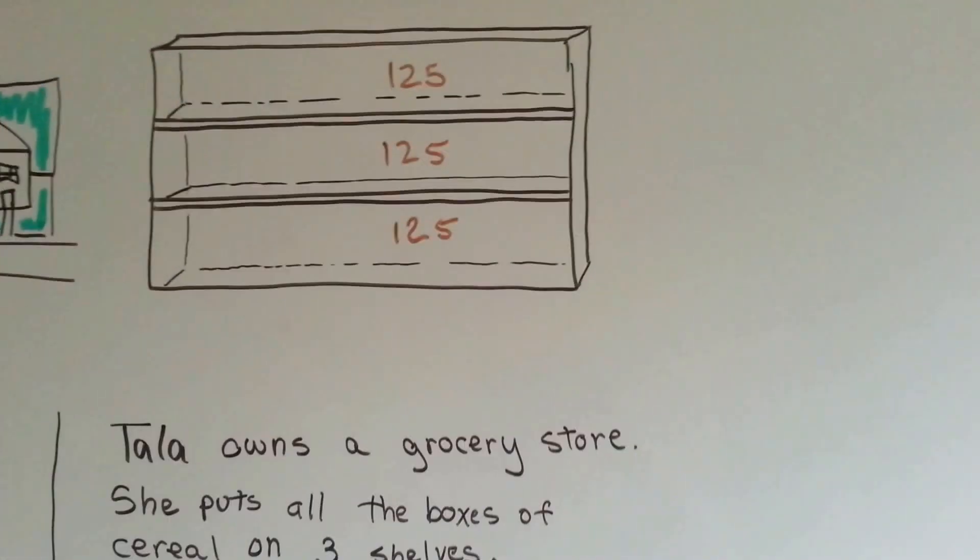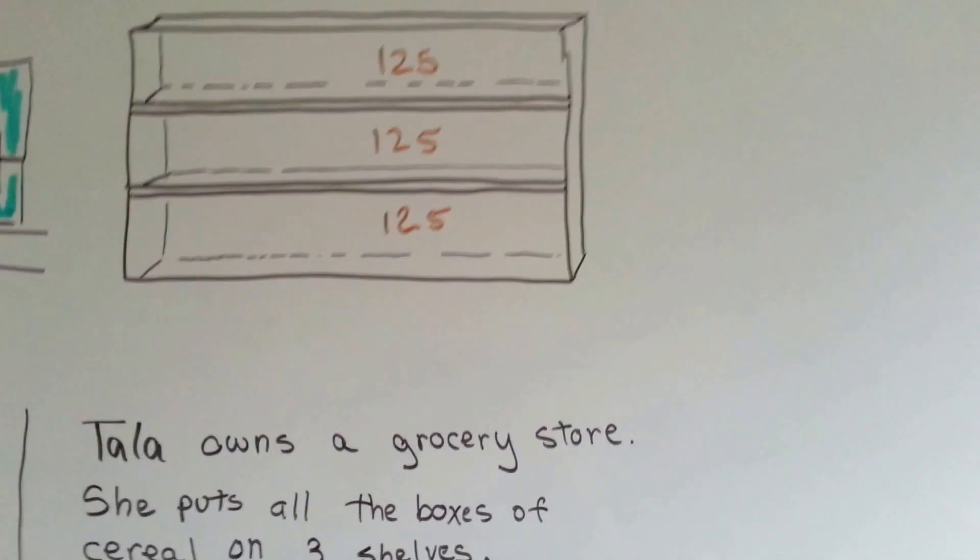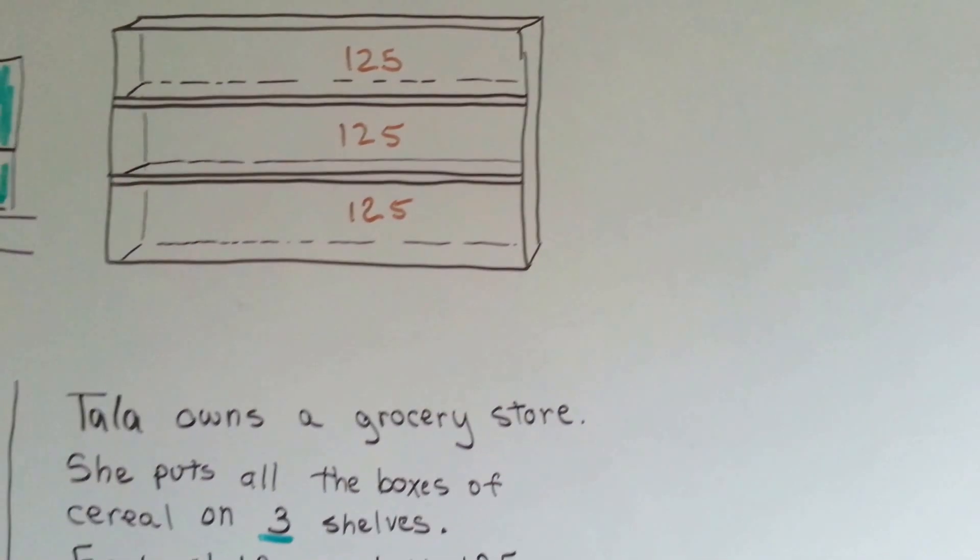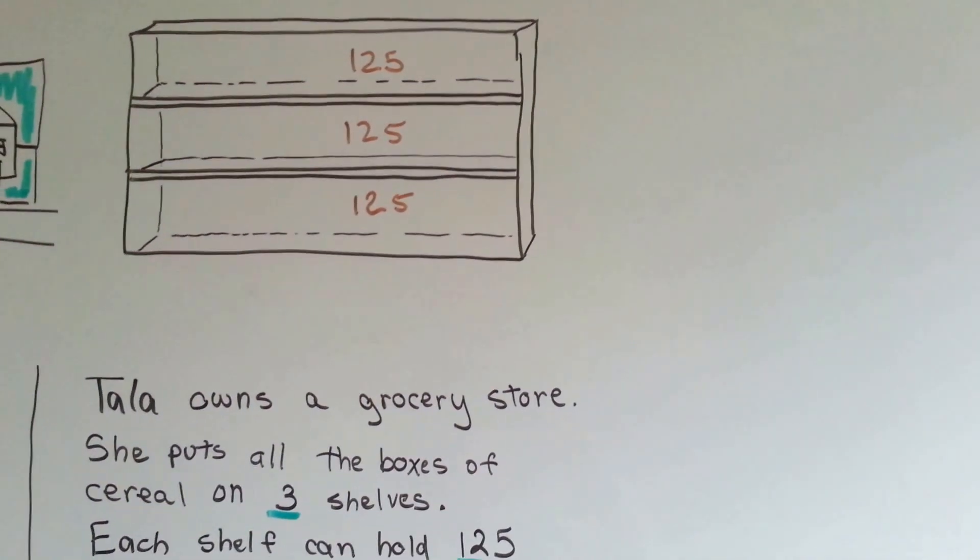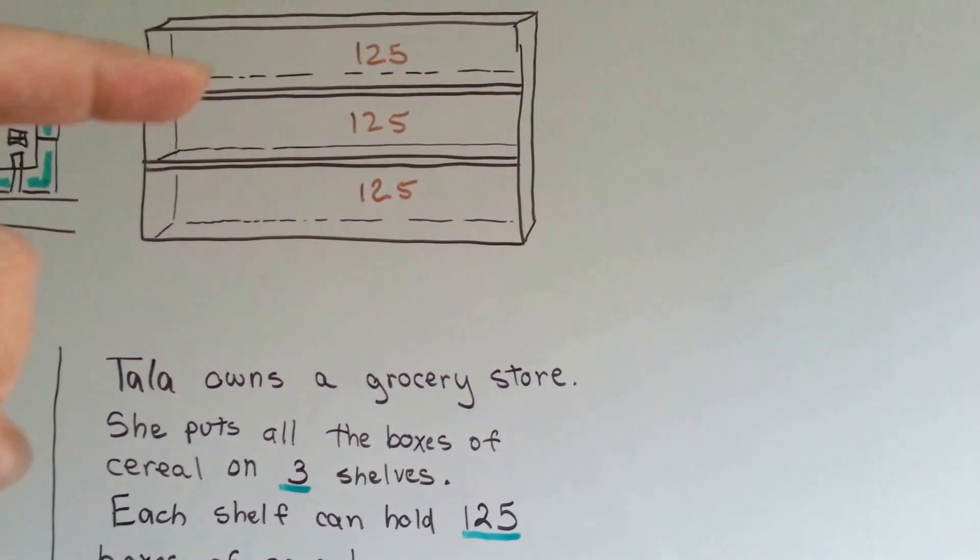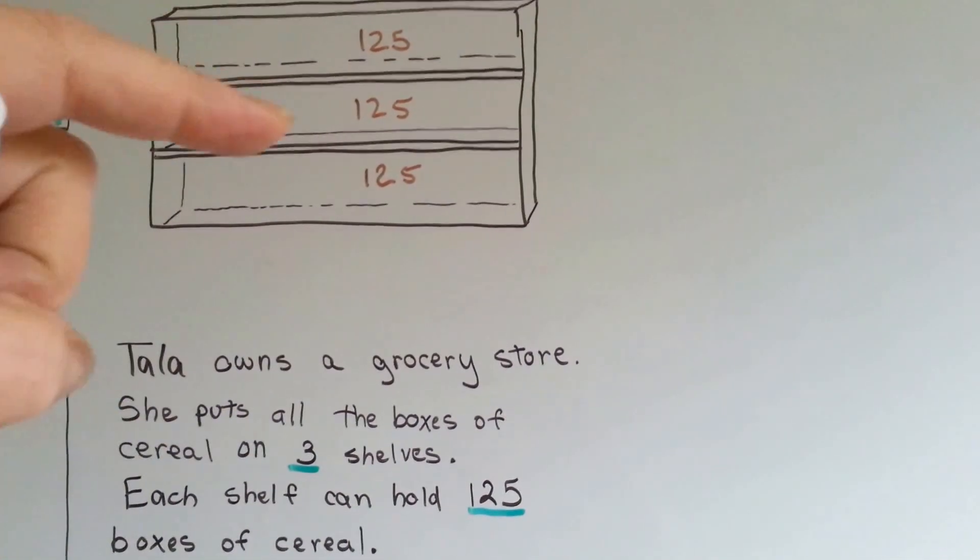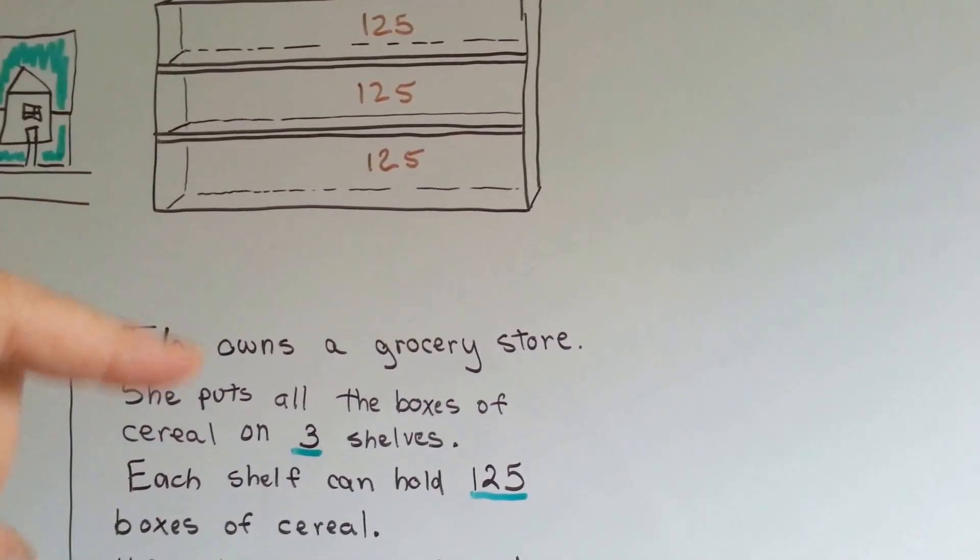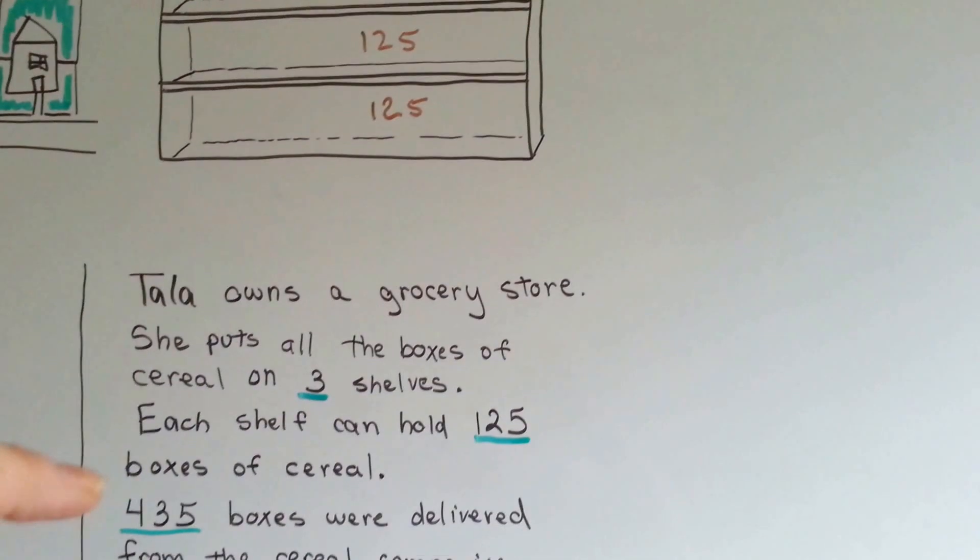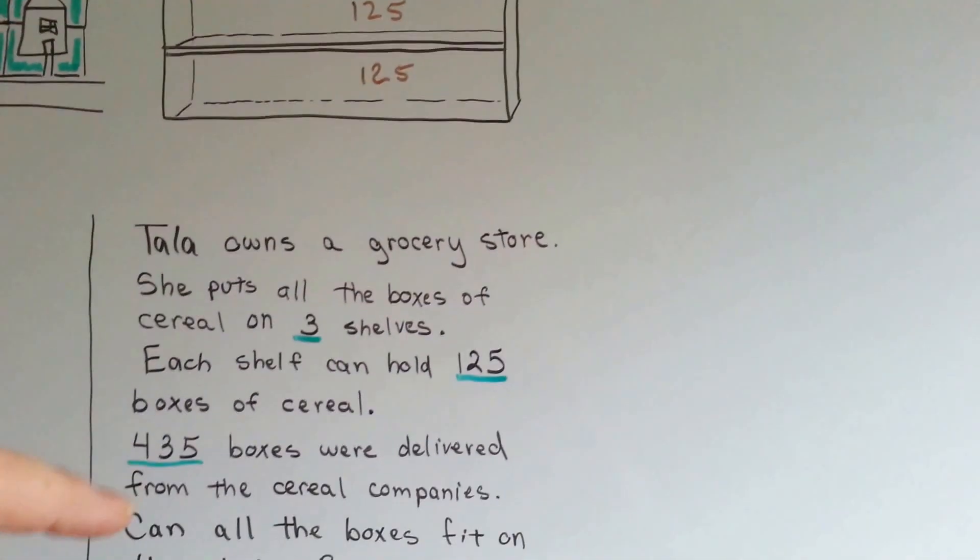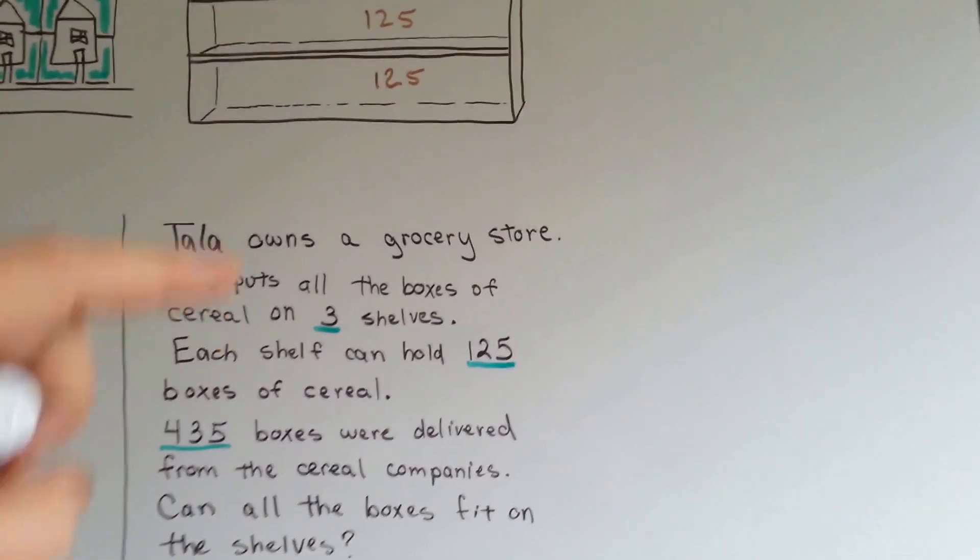Alright, look at this empty shelf. Tala owns a grocery store. She put all the boxes of cereal on three shelves. One, two, three. Each shelf can hold a hundred and twenty-five boxes of cereal. If four hundred and thirty-five boxes were delivered from the cereal company, can all the boxes fit on the shelves?